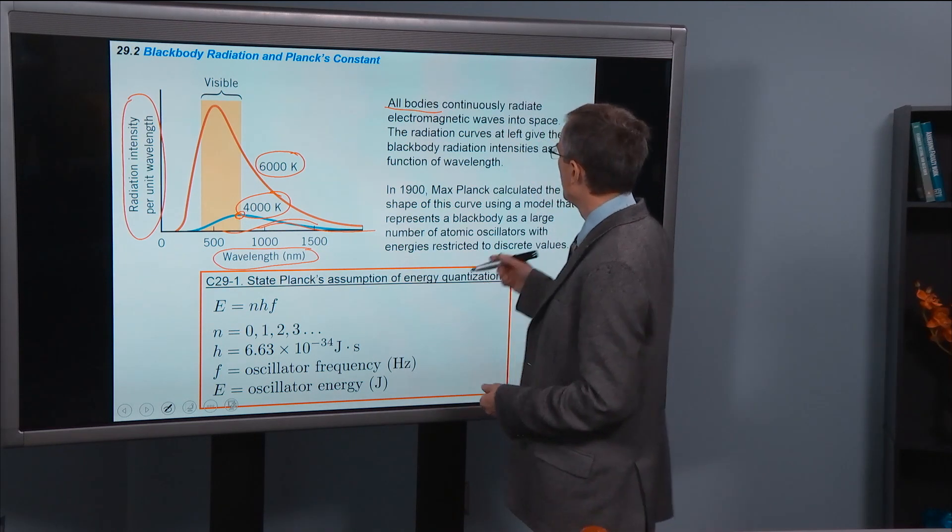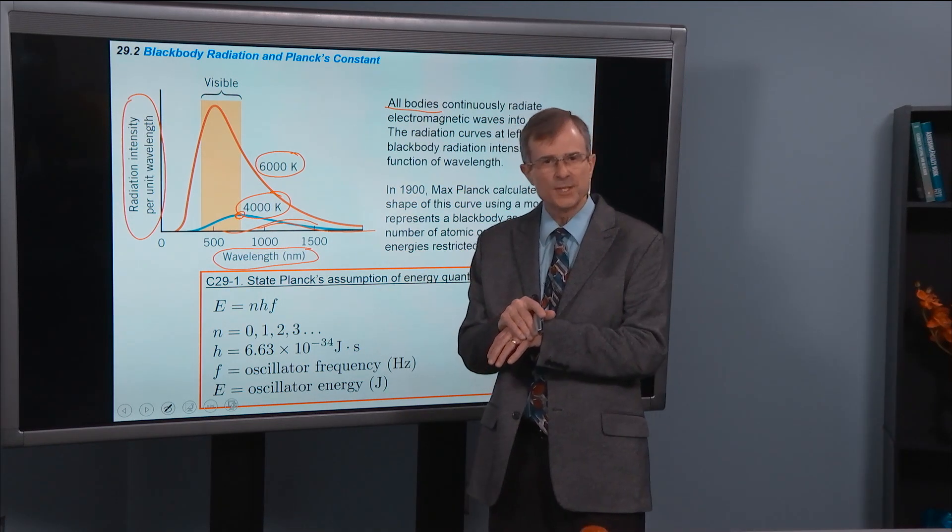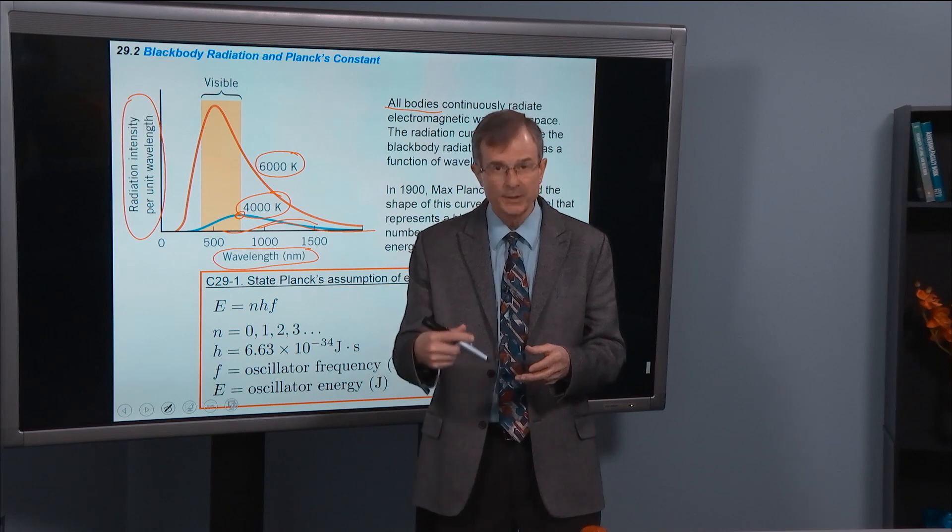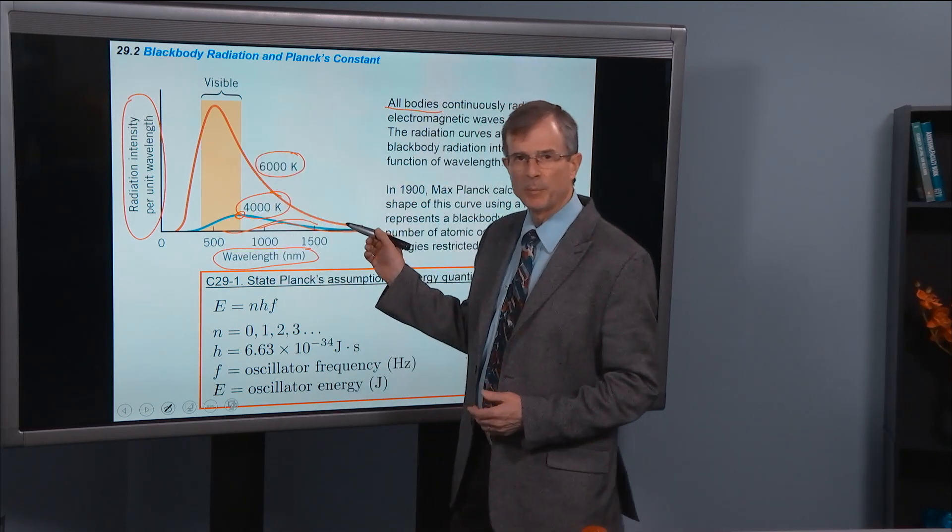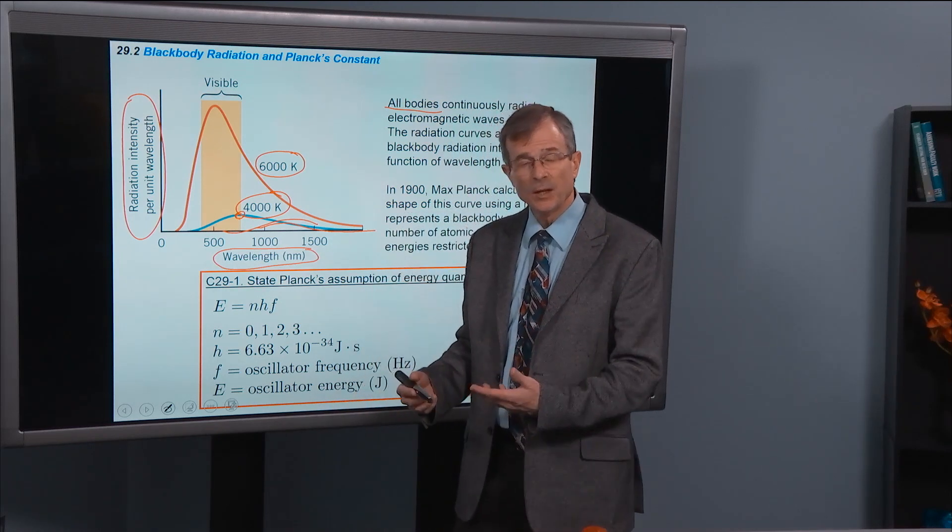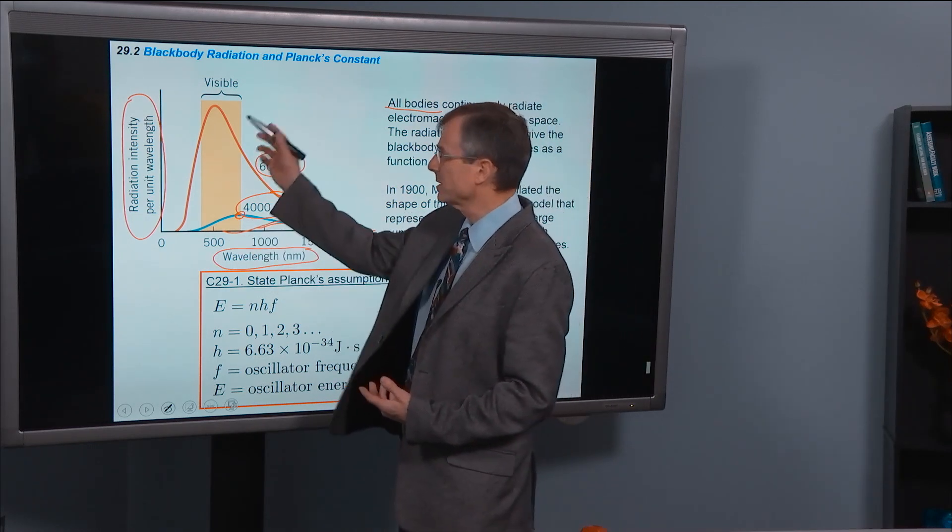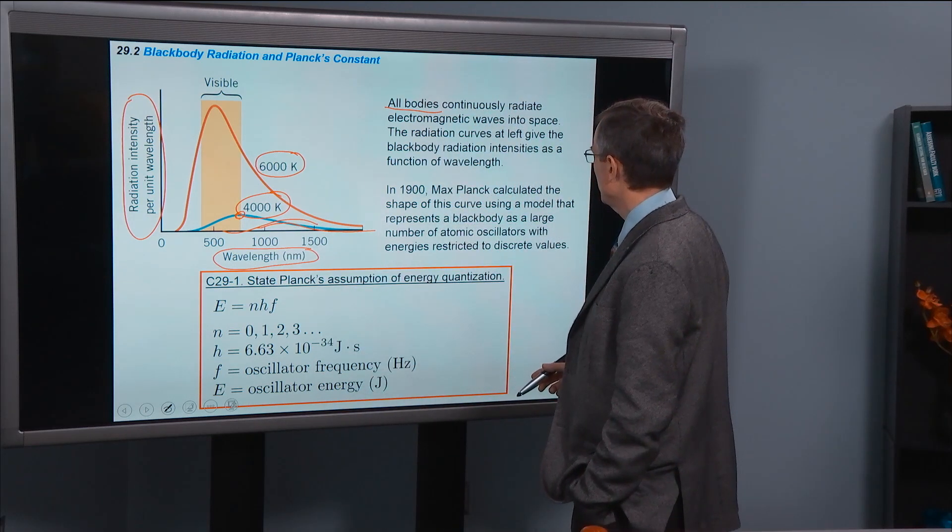Bodies that are perfect emitters and that absorb all radiation incident, like the hole in the box that I showed you, will closely replicate this black body spectrum. Our bodies are not that way, but they'll come close. They'll approximate this black body curve.